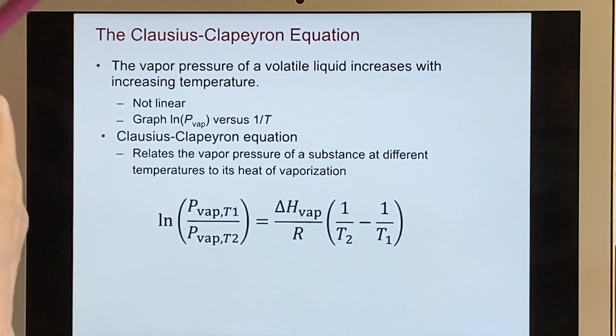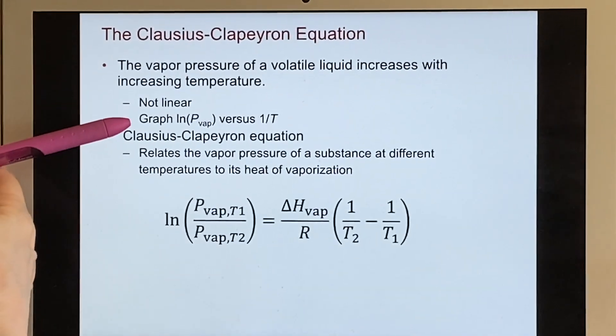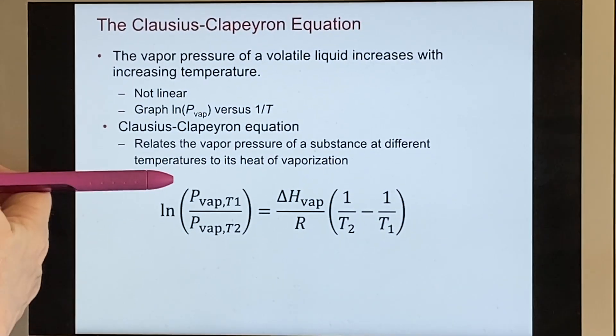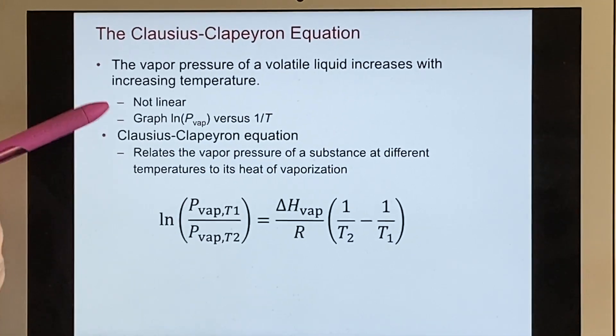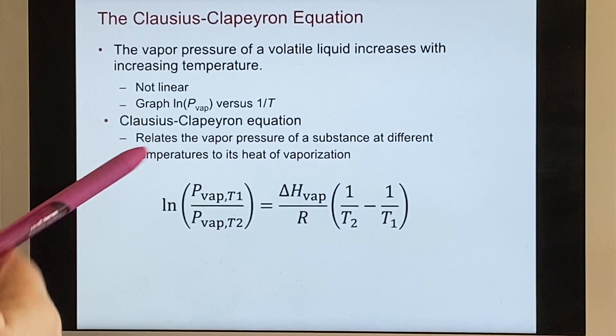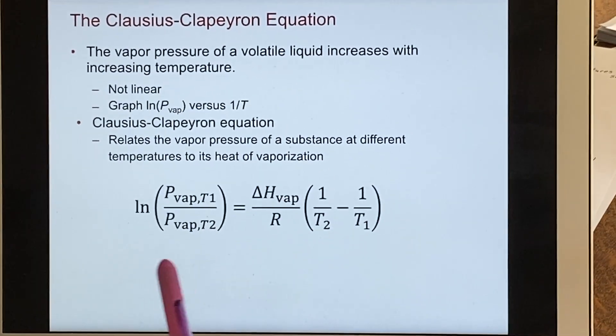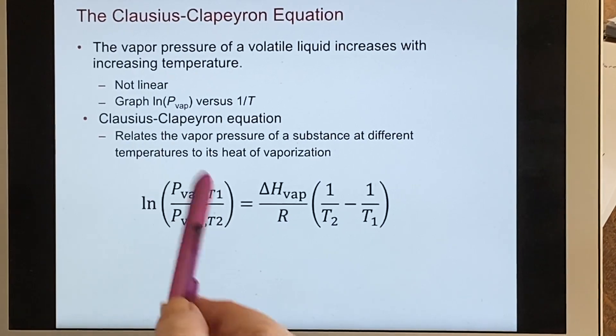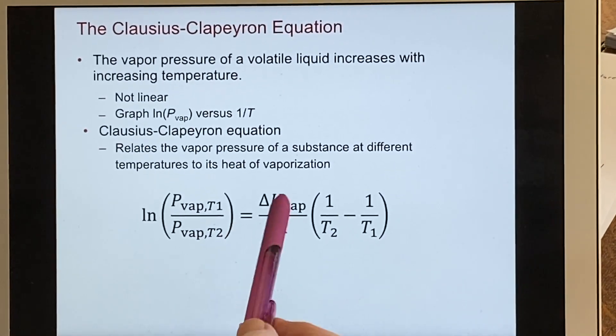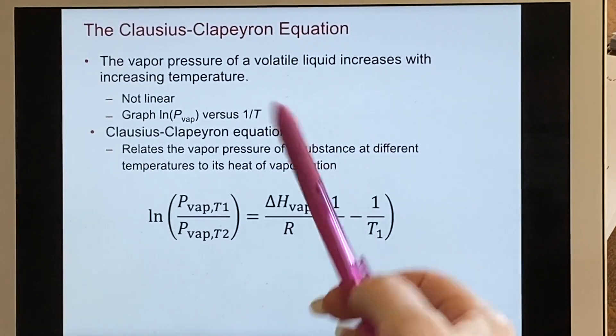One is not linear, as we saw in the previous slide. But if we did a graph where we were taking the logarithms of pressures and comparing them to one over the temperature, which has to be in Kelvin, then we could in fact do something that looked linear. This would be Y equals M, and then one over T would be your value of X.